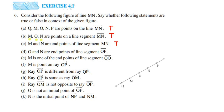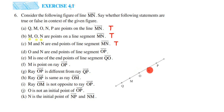The next statement is: O and N are the endpoints of line segment OP. This is false. For segment OP, O and P should be the endpoints. N is a point on the line segment but not an endpoint — you can see it is at the center of OP. So the answer is false.